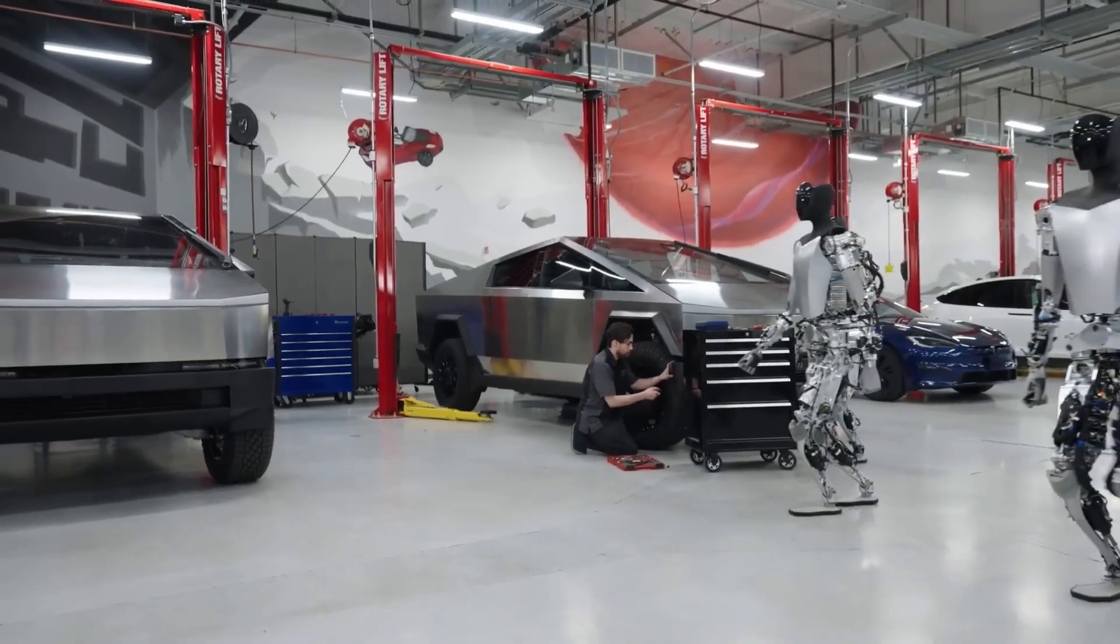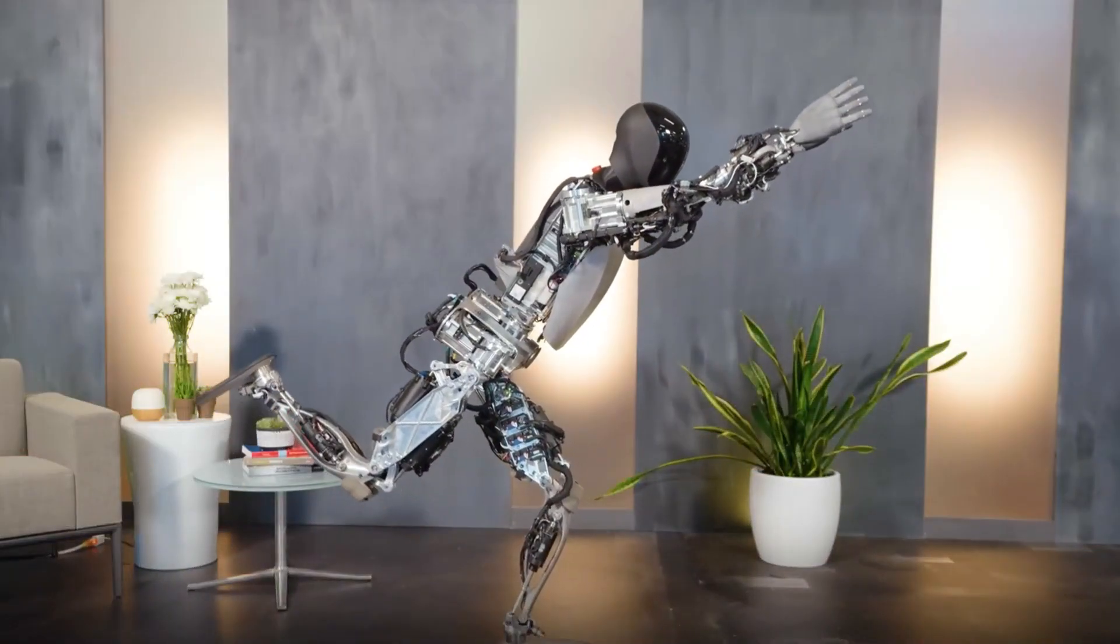The prototypes demonstrated some of the capabilities and features of Optimus, such as vision, touch, movement, and communication. They also showed some of the challenges and difficulties that Tesla faces in developing a humanoid robot, such as balance, coordination, and stability.